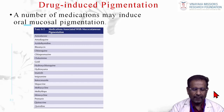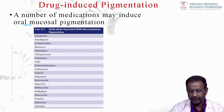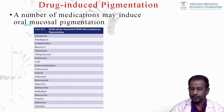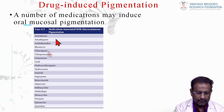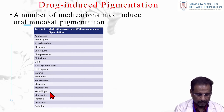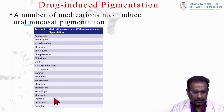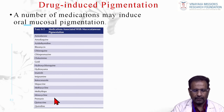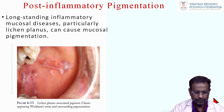Drug-induced pigmentation: a number of medications cause mucosal pigmentation. Important examples include bleomycin, chloroquine, ketoconazole, and quinidine. These drugs induce pigmentation in the oral mucosa.